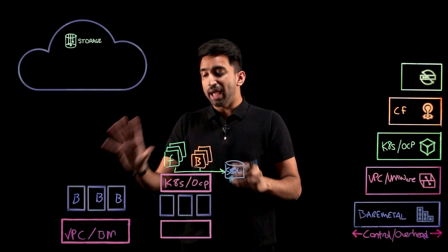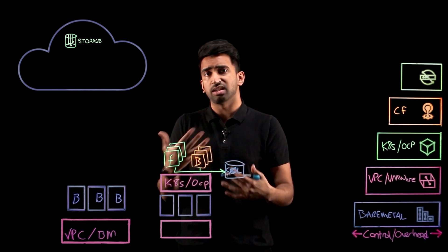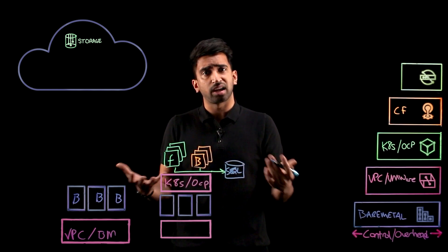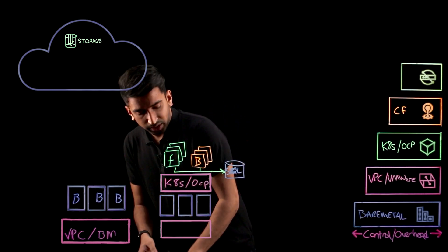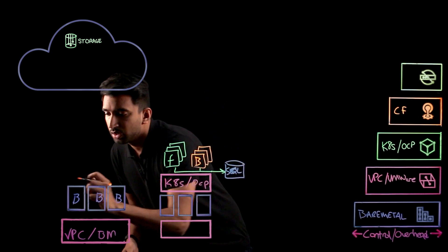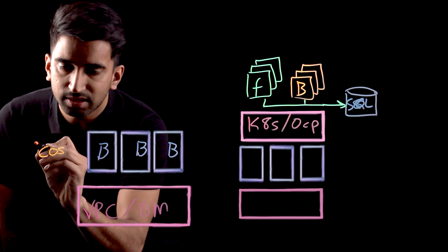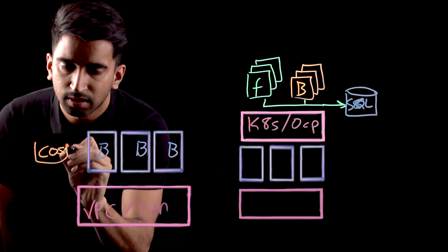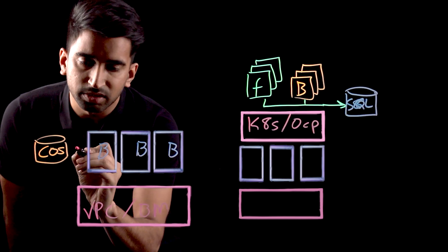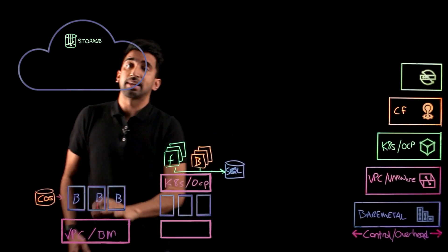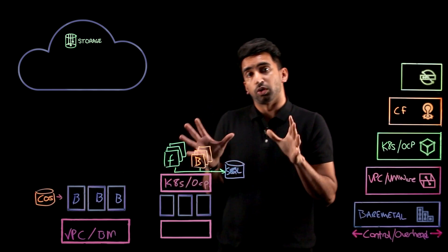Now, for our backend application, let's say we need something different — not a standard SQL store, but something like cloud object storage. So here, we'll sketch out a cloud object store instance, which our backend application will be using. So, we've talked about storage.